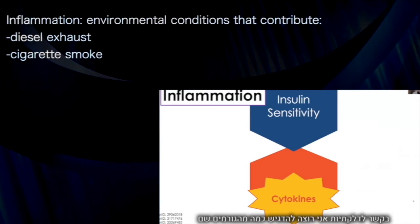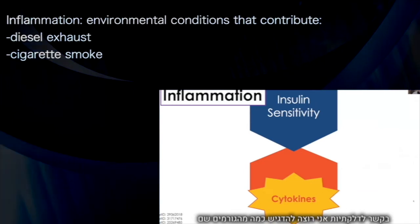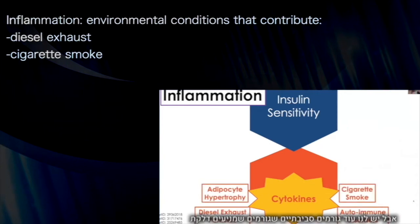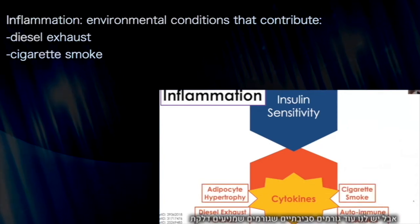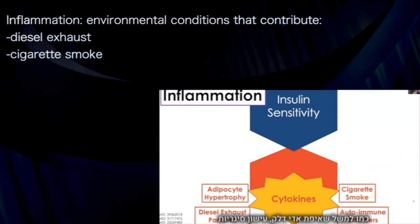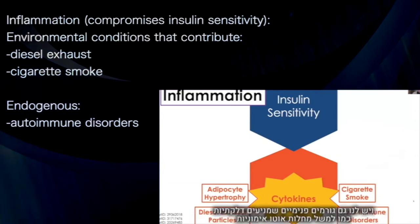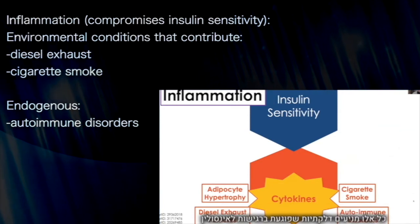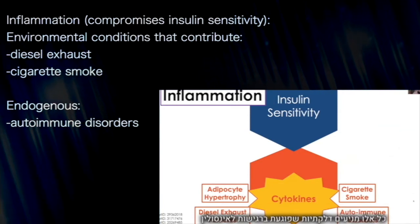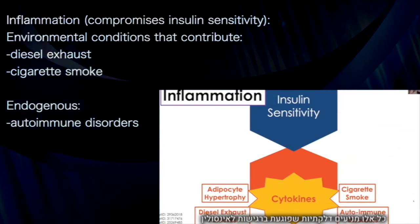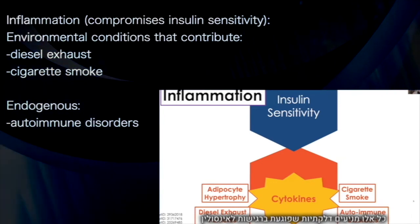With regards to inflammation, some of the primary inputs include environmental stimuli like diesel exhaust particles and cigarette smoke, and endogenous stimuli like autoimmune disorders. All of these are known to increase inflammation, which is then known to compromise insulin sensitivity.